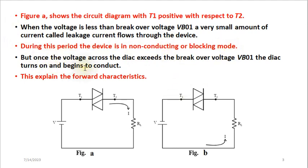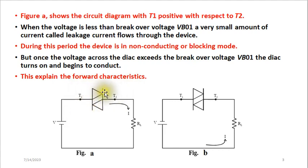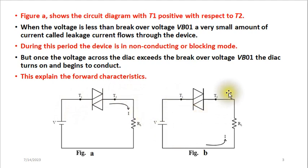Whenever the voltage is increased to exceed that minimum break-over voltage, the DIAC will turn on and start conducting — this is what we call the forward characteristics. As you can see, this is T1 and this is T2. In figure A, T1 is made positive with respect to T2, so conduction is from T1 to T2. In figure B, we reverse the polarity so T1 is negative, and conduction is from T2 to T1 — that is what we mean by a bidirectional device.